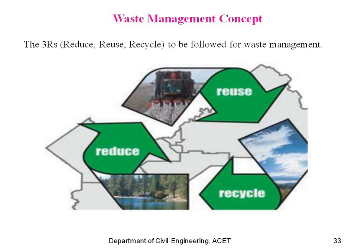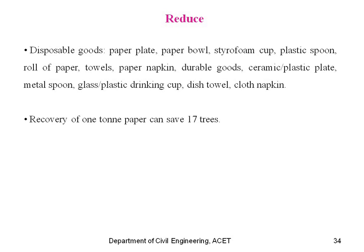What is reduce? Disposable goods like paper plates, paper bowls, styrofoam cups, plastic spoons, rolls of paper towels, and paper napkins should be replaced with durable goods such as ceramic plates, metal spoons, glass cups, dish towels, and cloth napkins. Recovery of 1 ton of paper can save 17 trees, so papers are also to be saved and not wasted.